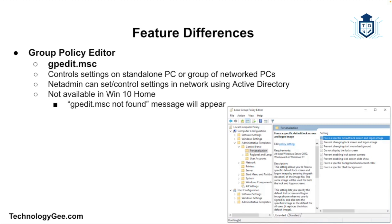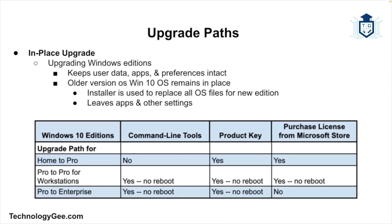Group Policy is a tool for controlling the settings on a standalone computer or a group of network computers. A network administrator can set and control almost all settings using Active Directory. The Group Policy Editor is accessed via the gpedit.msc command, but it is not normally available to Windows 10 Home users — that command will typically respond with a 'gpedit.msc is not found' error. However, users can download unofficial products from non-Microsoft sources to configure settings management.